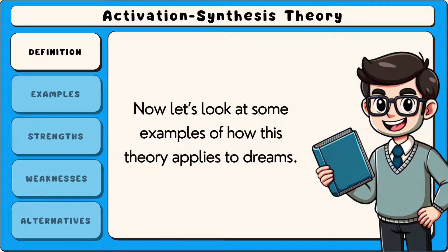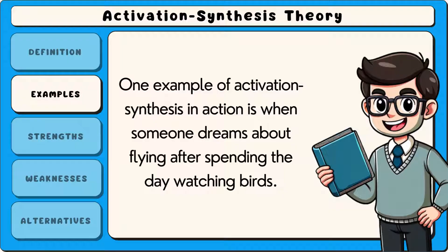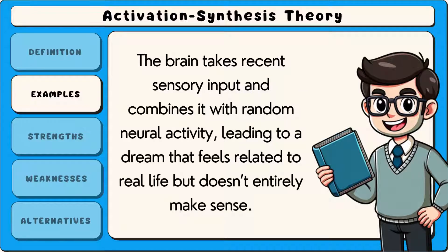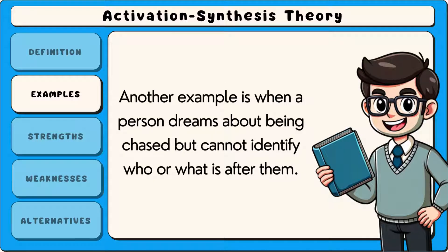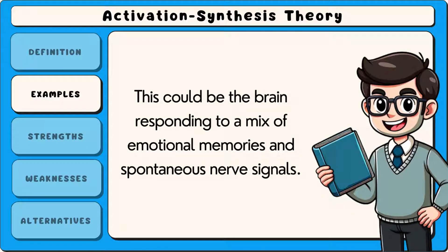Now let's look at some examples of how this theory applies to dreams. One example is when someone dreams about flying after spending the day watching birds. The brain takes recent sensory input and combines it with random neural activity, leading to a dream that feels related to real life but doesn't entirely make sense. Another example is when a person dreams about being chased but cannot identify who or what is after them. This could be the brain responding to a mix of emotional memories and spontaneous nerve signals.